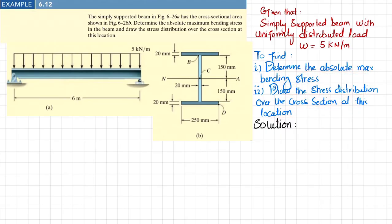Let's start with the solution. First, we remove the reaction supports. We will have a reaction force — let this be Ra — and the reaction force at the other point represented as Rb. So we will find Ra and Rb.